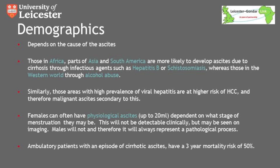It's important to remember that females can often have a degree of physiological ascites, approximately about 20 mls, depending on what stage of menstruation they may be. This will not be detectable clinically but can sometimes be seen on imaging such as ultrasound. Males will never have that amount of fluid, so if you see free fluid within the abdomen on an ultrasound scan, it usually represents a pathological process. Ambulatory patients with an episode of cirrhotic ascites have a three-year mortality risk of about 50%, so this is a serious complication of cirrhotic liver disease.